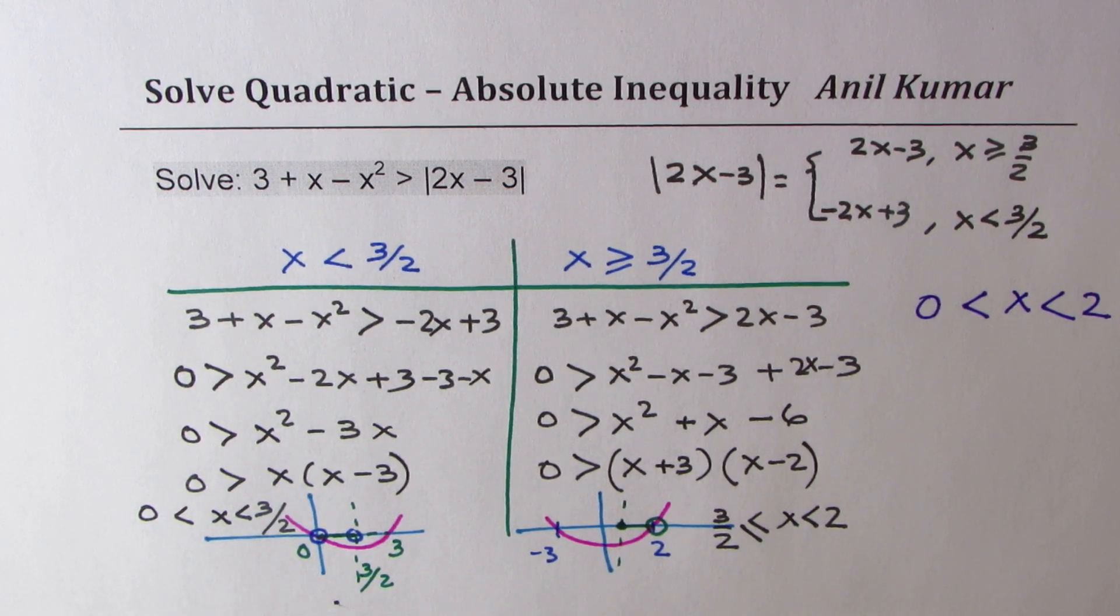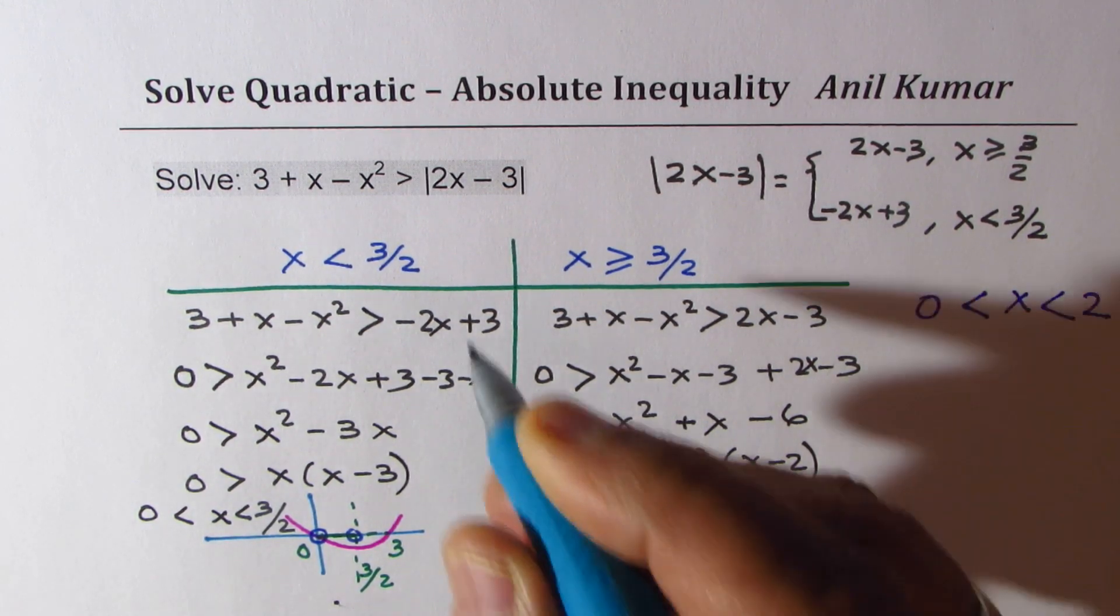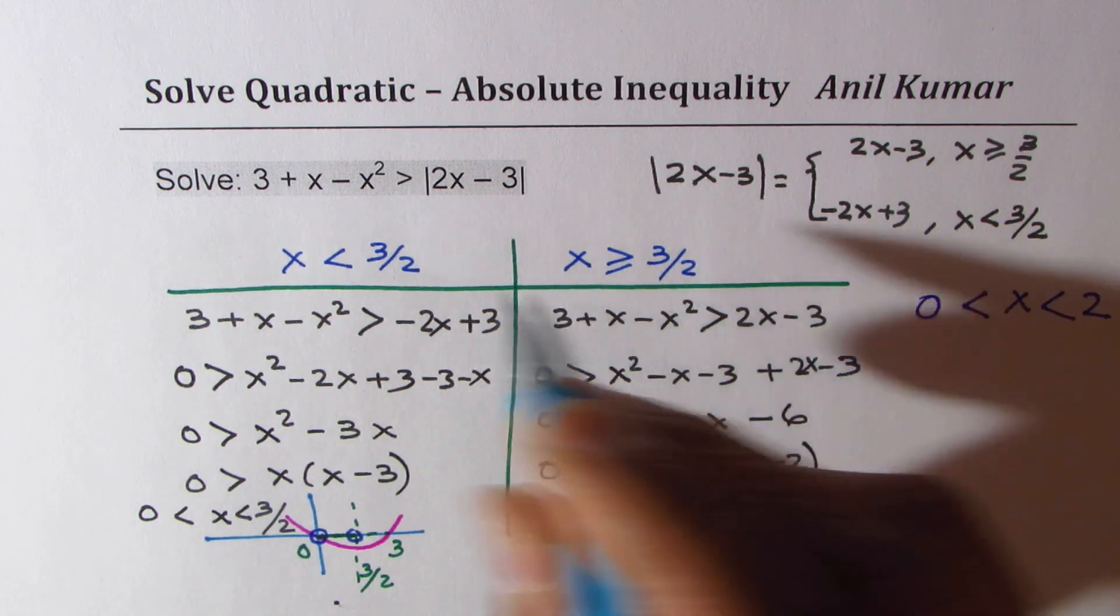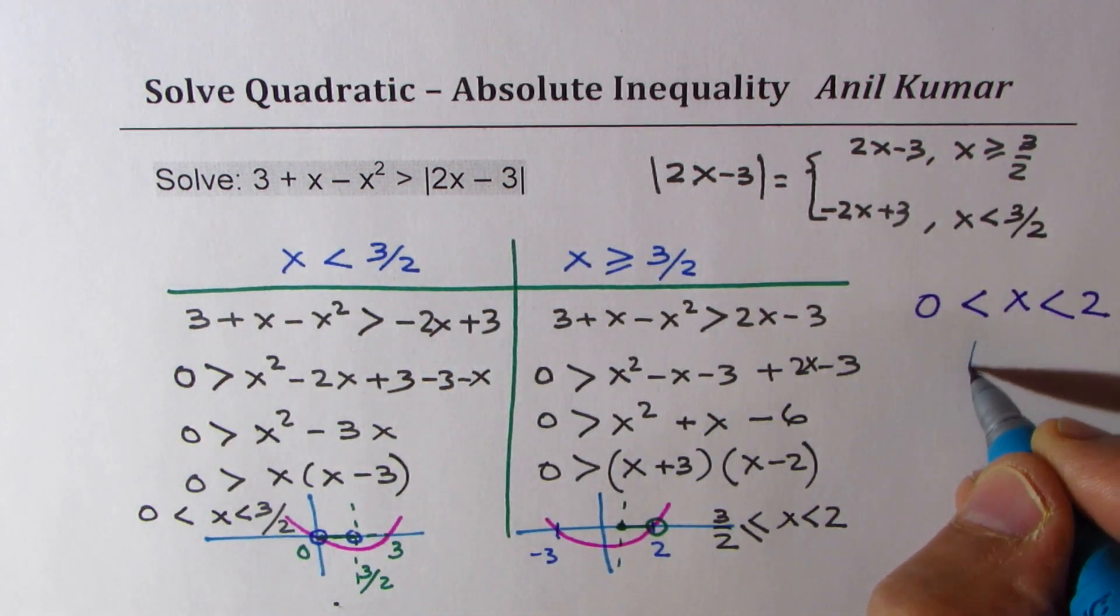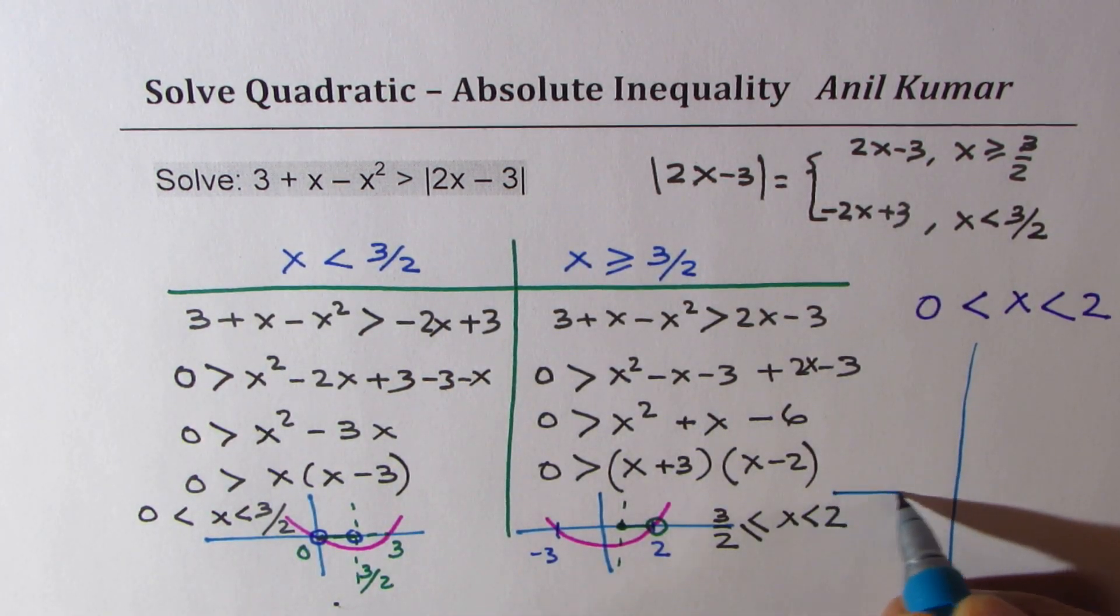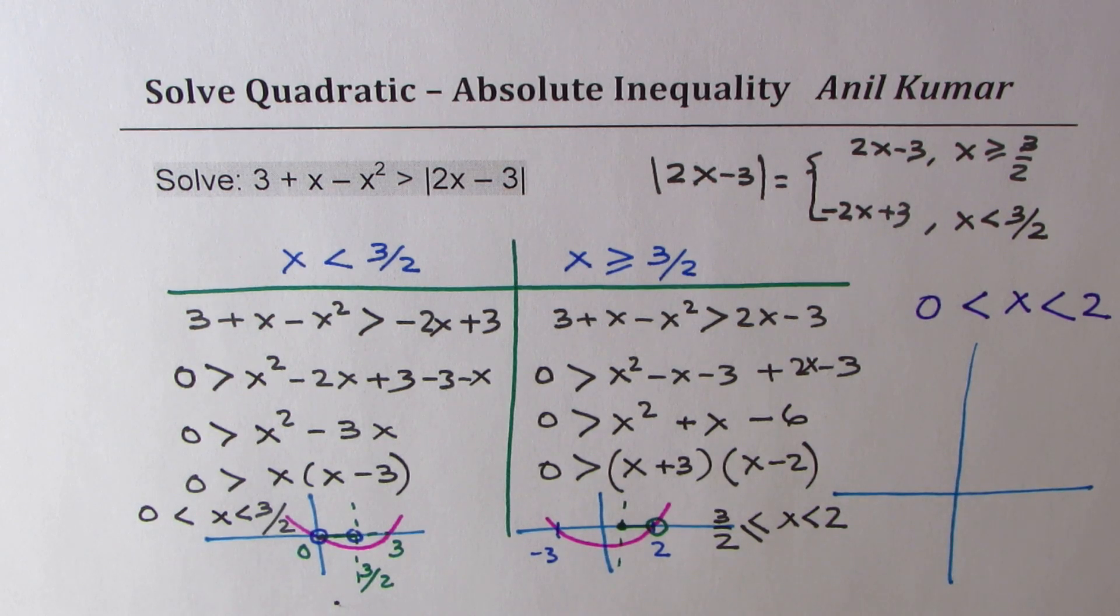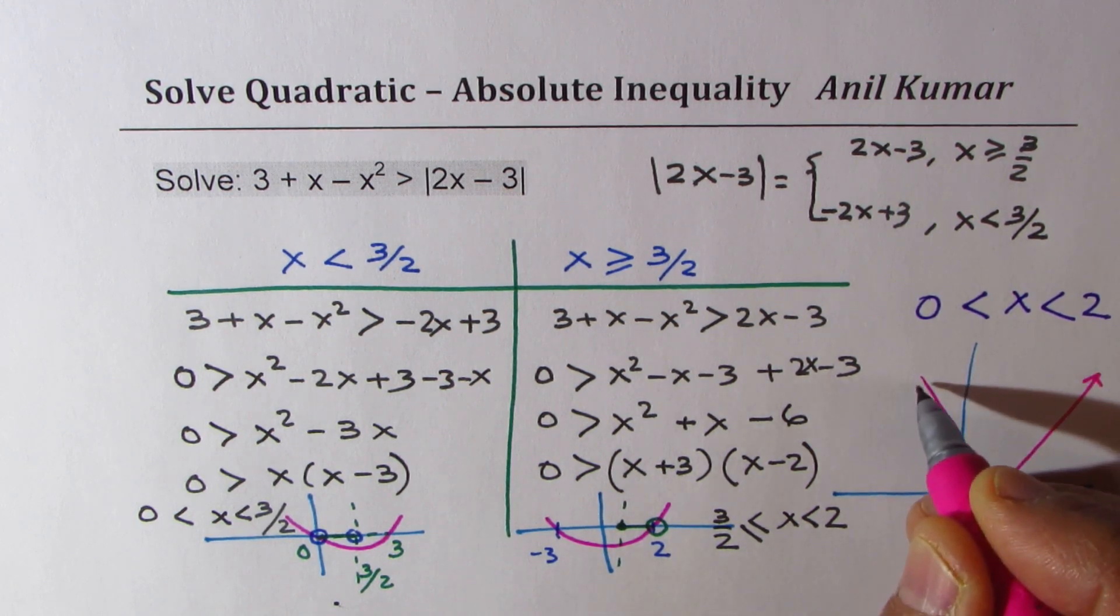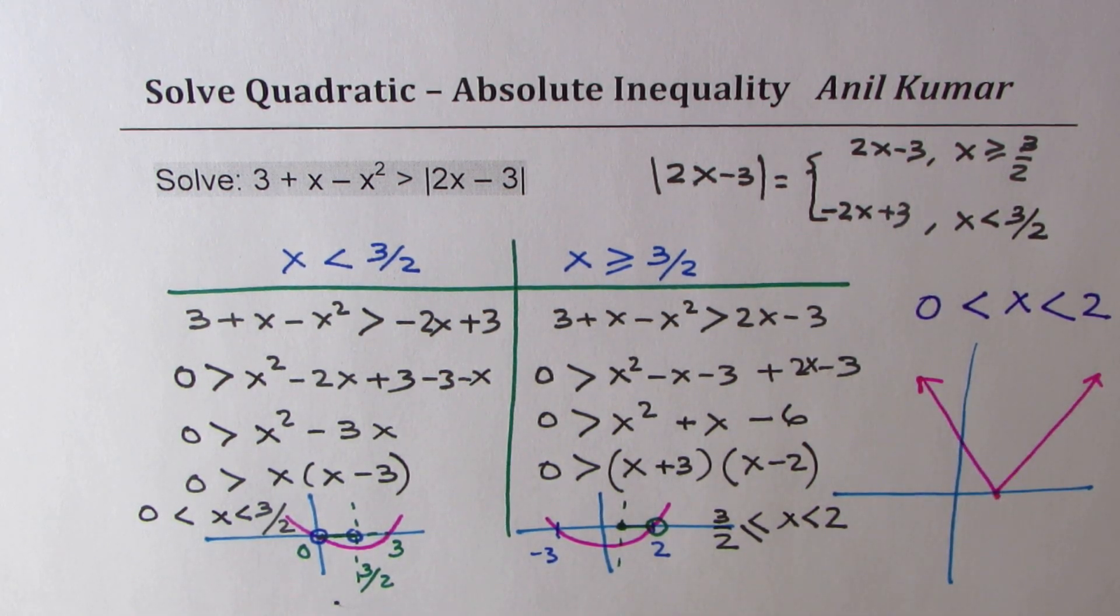So that is how you solve it. You could also do it graphically. So if you graph these two, then what do you get? Let me sketch a simple graph here. Absolute value 2x minus 3 means kind of like this, where the point here is 3 by 2 or 1.5.